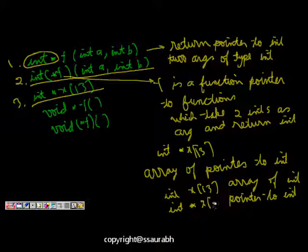Hence, if we add int star x 13, this is array of pointer to int.